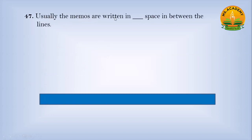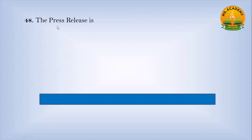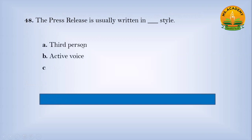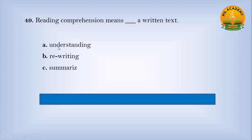Usually memos are written in dash space in between the lines. Option A Double, option B No restrictions, option C Single. Answer: C. Number Single space. The press release is usually written in dash style. Option A Third person, option B Active voice, option C First person. Answer: A. Number Third person. Reading comprehension means dash a written text. Option A Understanding, option B Rewriting, option C Summarizing. Answer: A. Number Understanding.